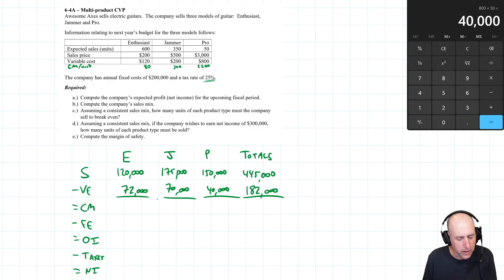Sales minus Variable Expenses is Contribution Margin. 120 minus 72 is 48,000. 175 minus 70 is 105,000. 150 minus 40 is 110,000. And 445 minus 182 is 263,000.